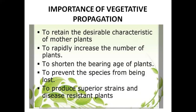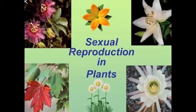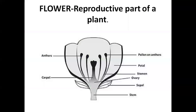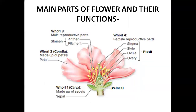Now the most important topic: sexual reproduction in plants. The majority of flowering plants reproduce sexually, and the flower is the reproductive part of a plant. A complete flower consists of four parts. The first one is the sepals, also known as the calyx. It is the green part of the flower and it protects the flower when it opens.